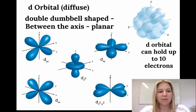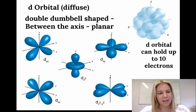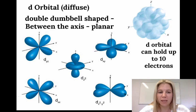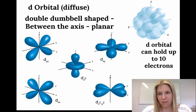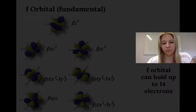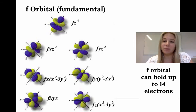The d orbital has shapes similar to the p orbital but they are double dumbbells, occurring between the axes in a planar way. The letters help distinguish which planes the orbitals use. The d orbital can hold up to 10 electrons, and when all the diagrams are combined it gets quite complex. The f orbital is even more complex — you don't need to remember all those shapes — but it's good to know the f orbital can hold up to 14 electrons.